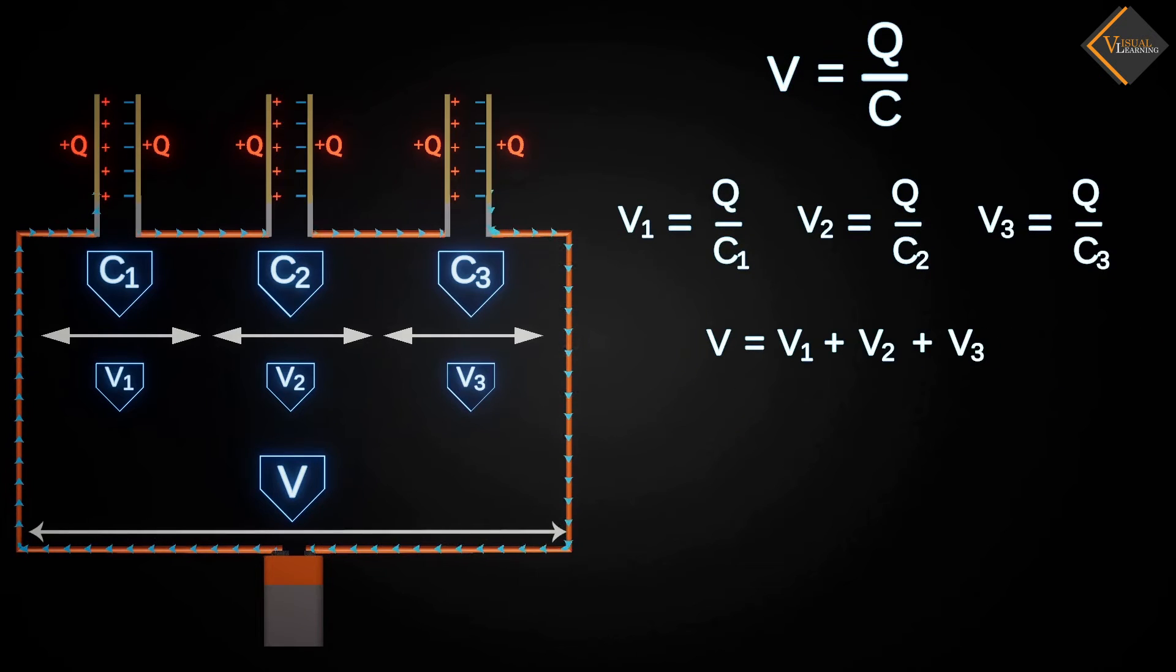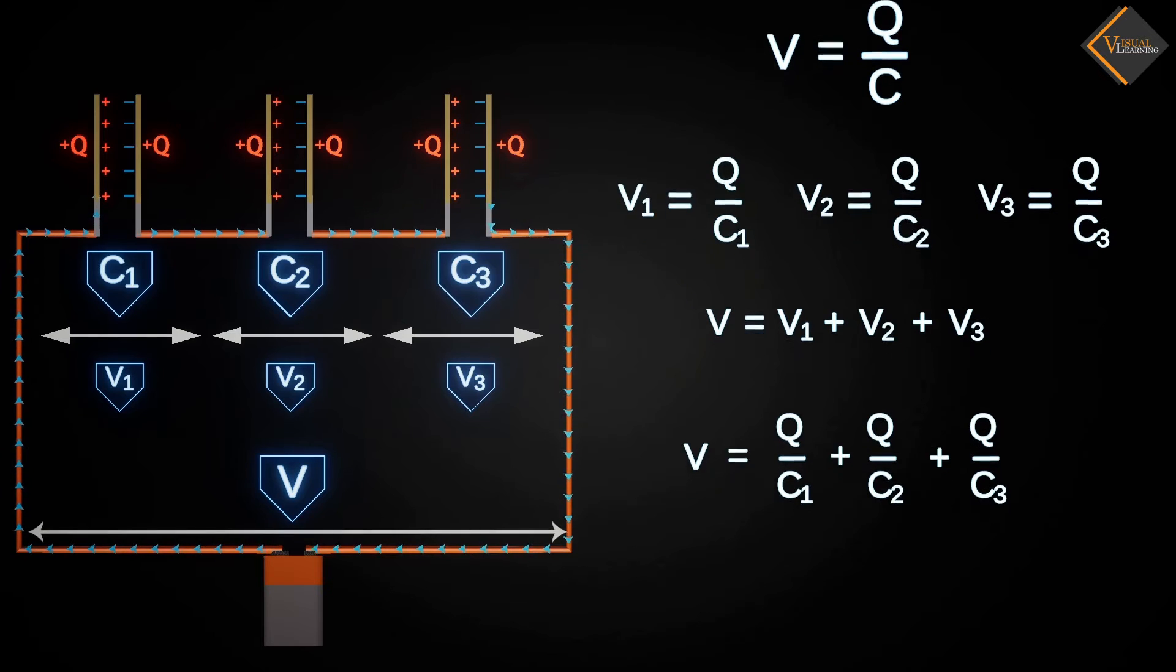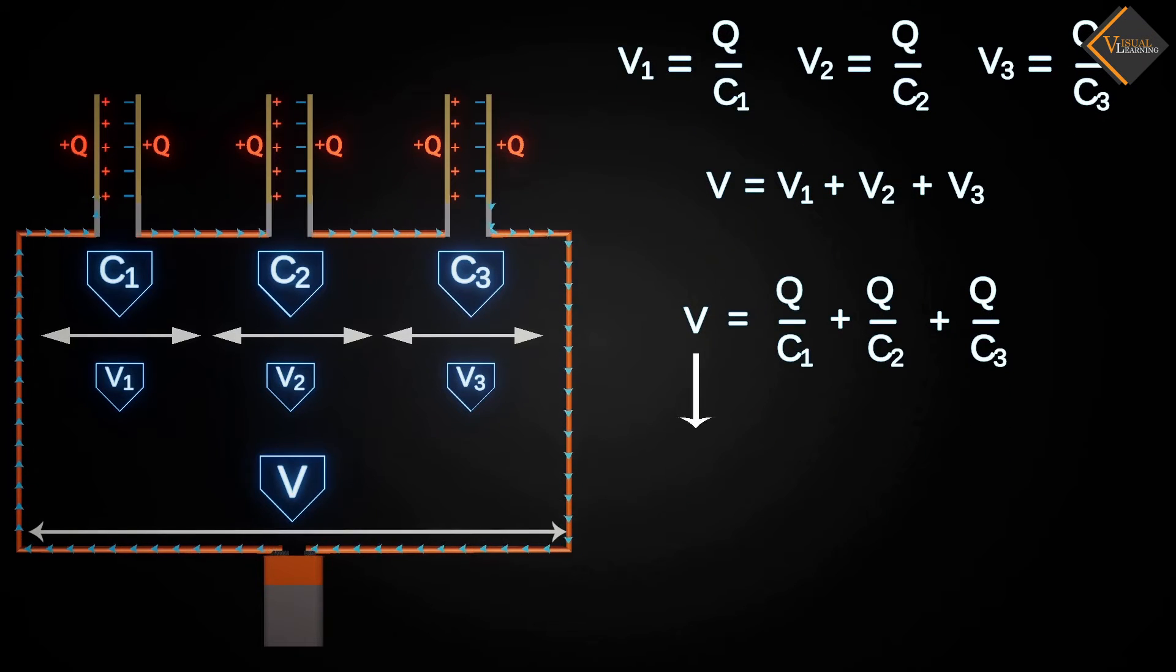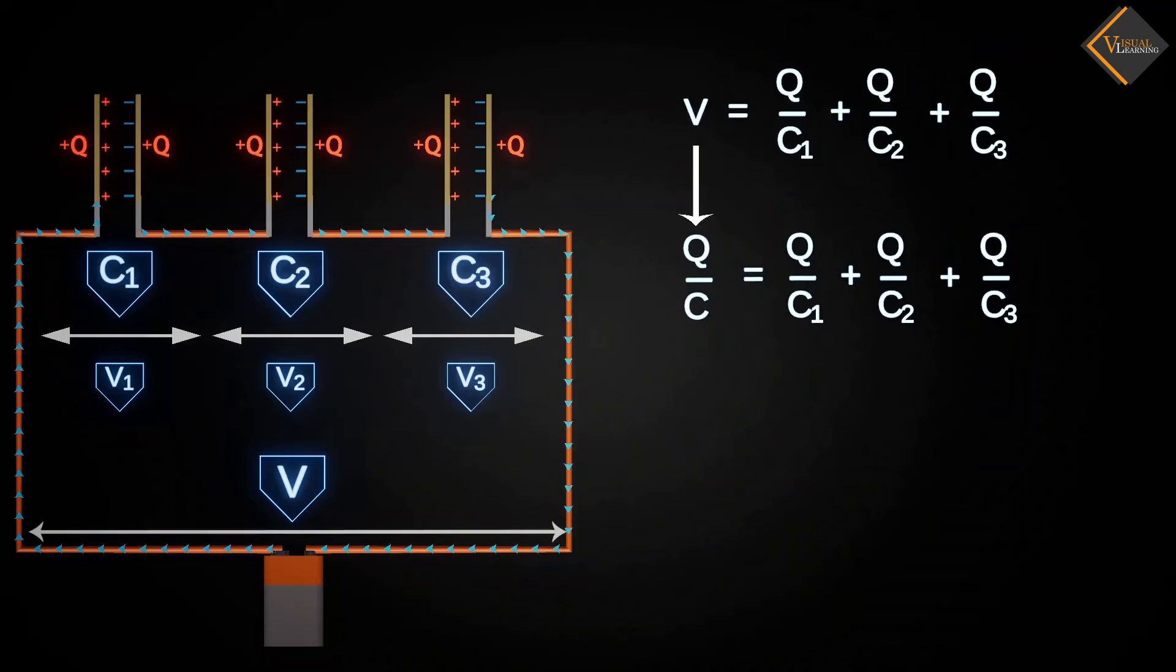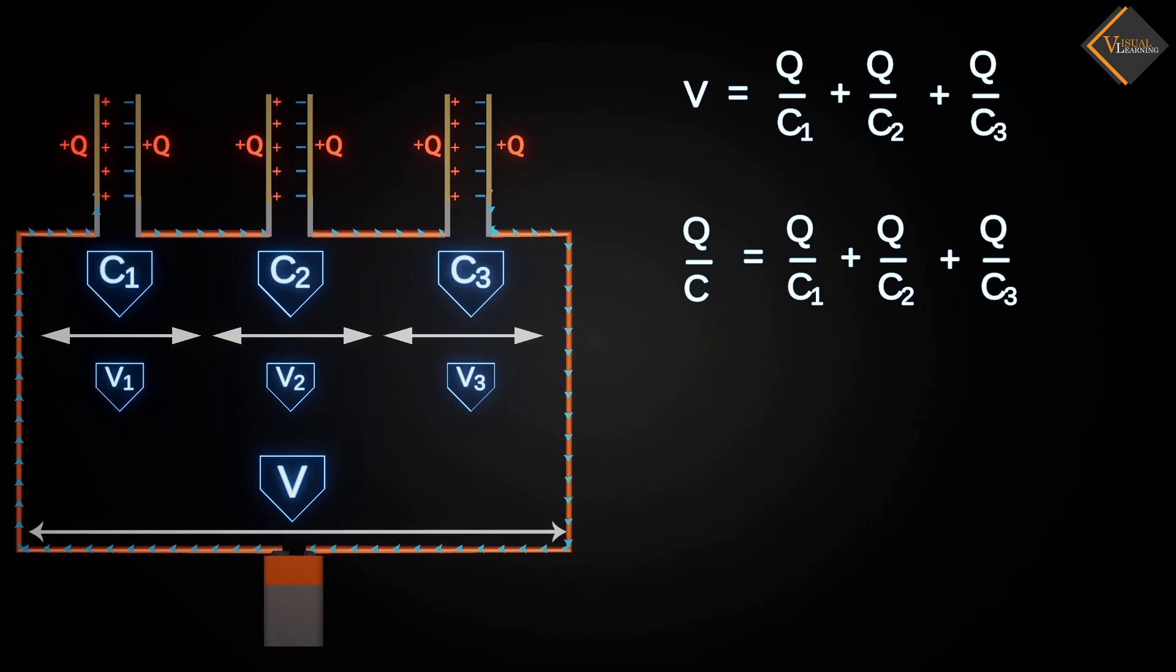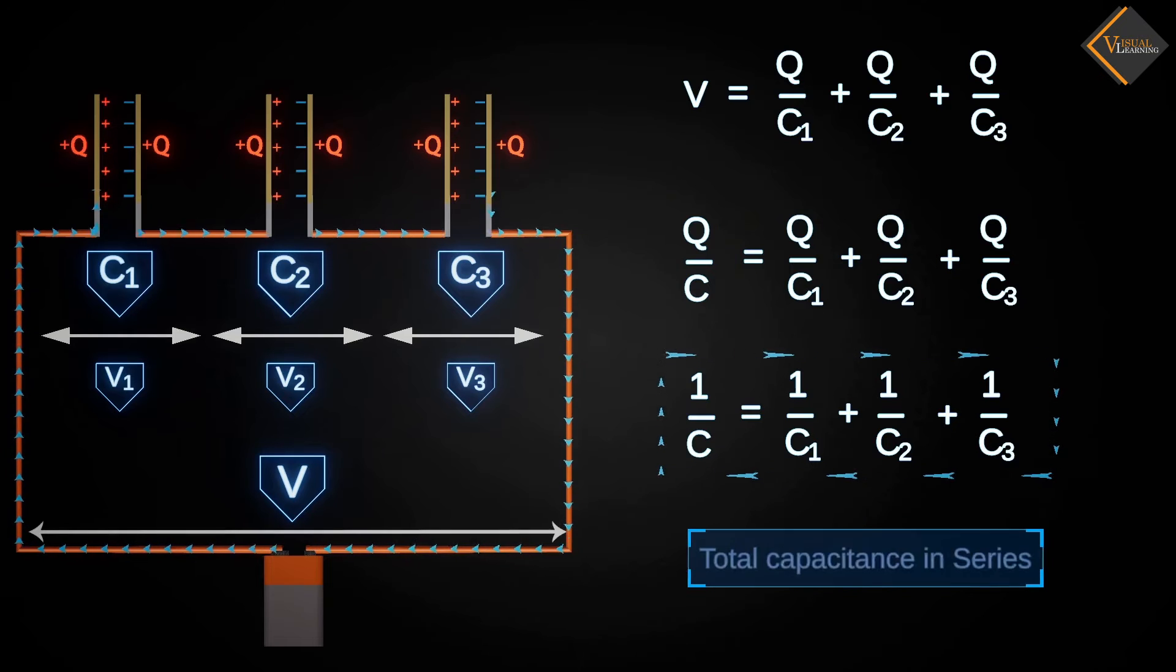Summing these potentials, we get an equation in which Q is common. If we replace V with Q divided by C, we can cancel out Q on both sides. And by cancelling out both sides, we obtain a value that represents the total capacitance of all three capacitors.